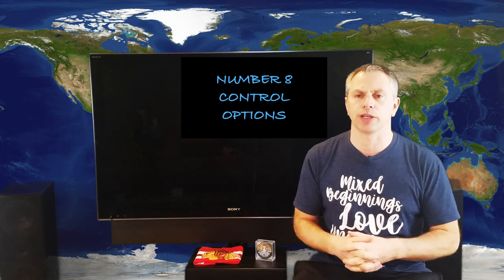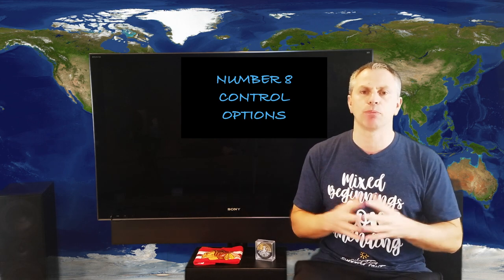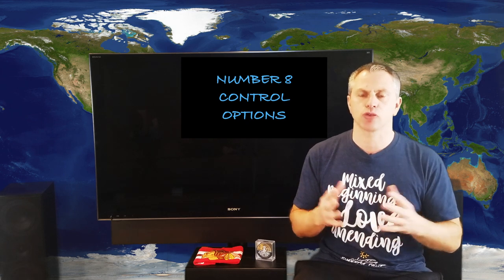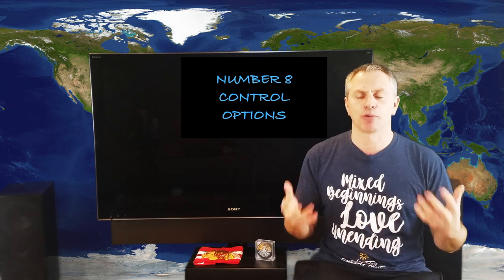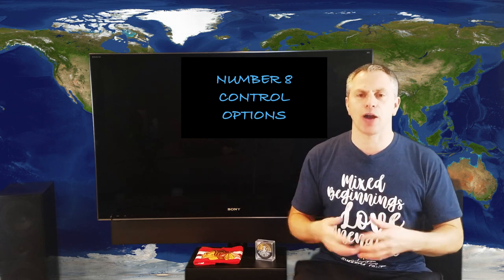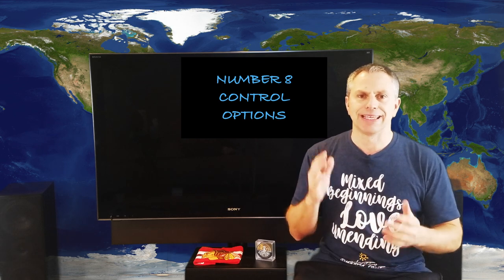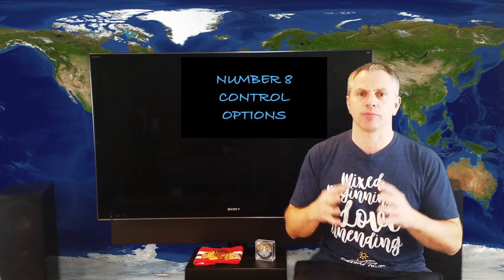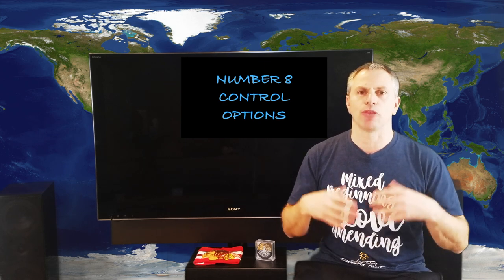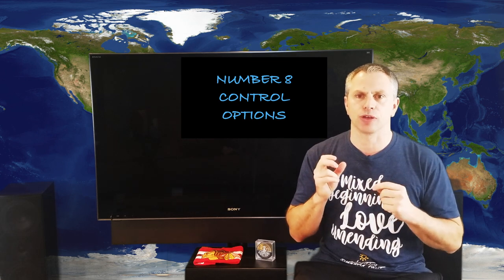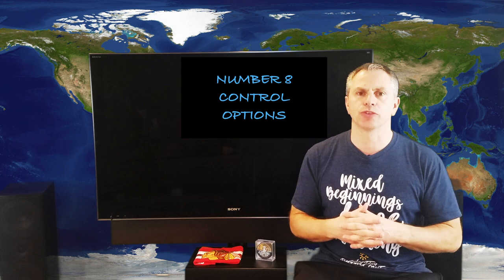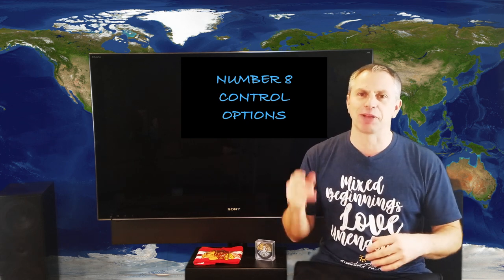Moving on to number eight — the next thing you need to consider is how you're going to control all of your gear. This is a very important aspect, because a lot of people put a system in and find it so cumbersome to operate. The wife comes home, wants to put on a program, and can't figure out how to turn on the TV. Get a control option that will make your system seamlessly integrate and operate with all the components, streamlining operation and making it easy and intuitive for everybody in the family, not just for you.